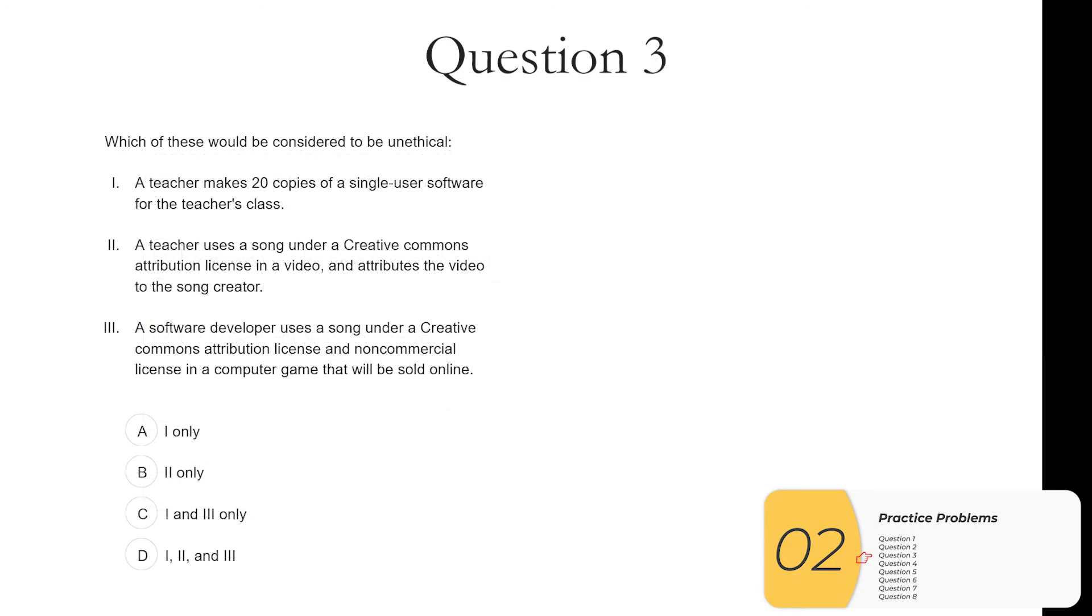Question three. Which of these would be considered to be unethical? One. A teacher makes 20 copies of a single user software for the teacher's class. So it doesn't matter if the teacher is doing the right thing or the teacher is a good person. The license says single user, so you can't copy it for 20 people. So one is unethical, which is what we are looking for.